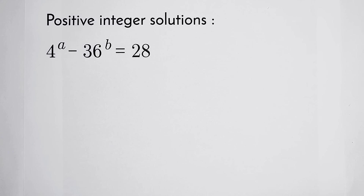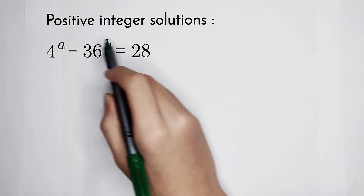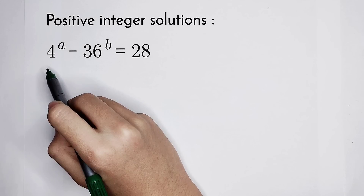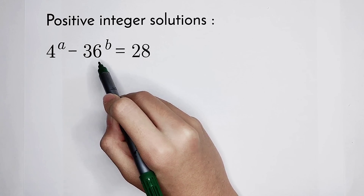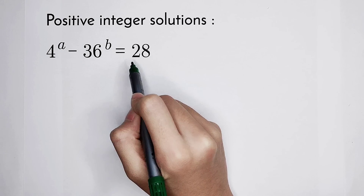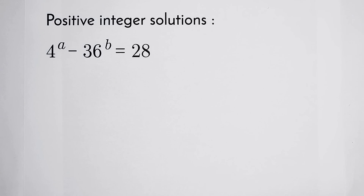Welcome back to Math Winnow. Solve the positive integer solutions of this equation: 4 to the power of a minus 36 to the power of b is equal to 28. How should we solve it?